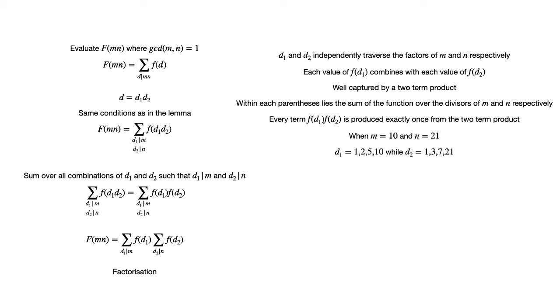For instance, when m equals 10 and n equals 21, we have that d₁ equals 1, 2, 5 and 10 while d₂ equals 1, 3, 7 and 21.